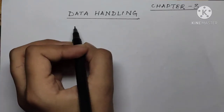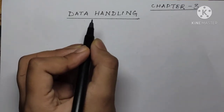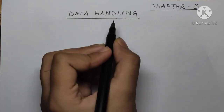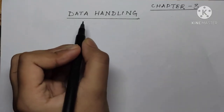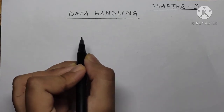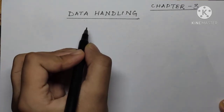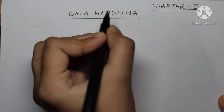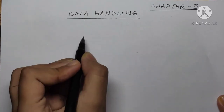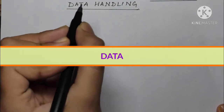Let's start Class 7 NCERT Chapter 3: Data Handling. In this chapter heading there are two words - first is 'data' and second is 'handling'. Data is a collection of numerical figures or observations giving us some particular type of information. Handling means to handle the data in such a way that it gives us information.